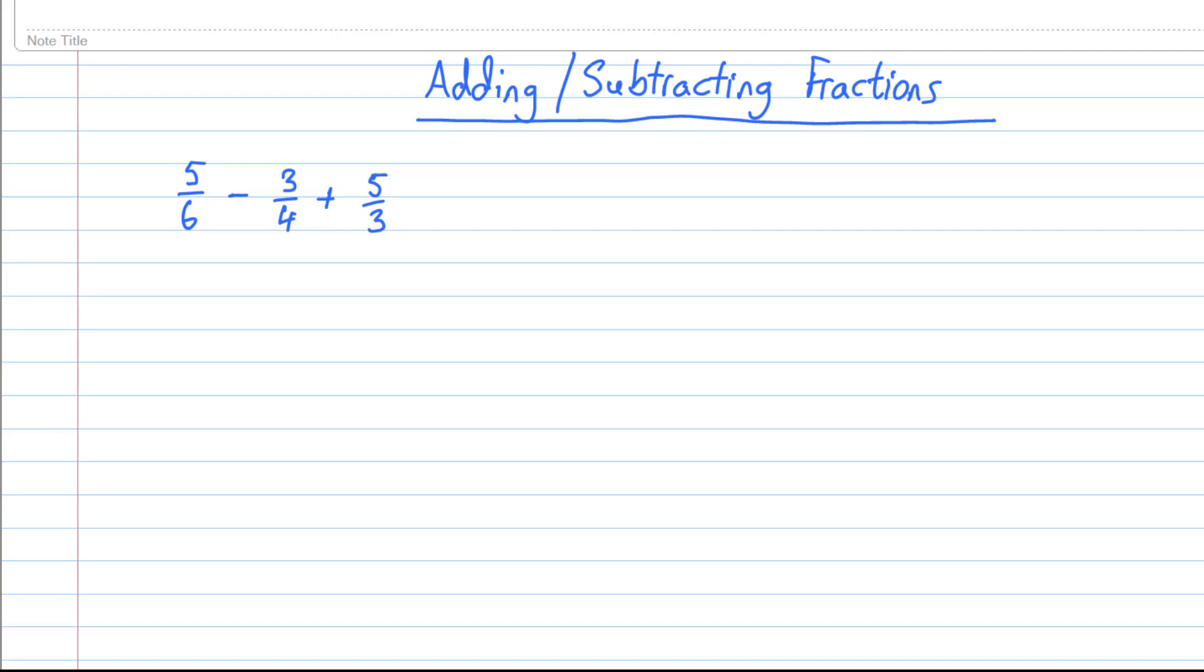In this video we're going to be looking at adding and subtracting fractions. For this example, it's going to be 5 over 6 minus 3 over 4 plus 5 over 3. It starts with needing to find a common denominator for each of the fractions, so we need the lowest common multiple of 6, 4, and 3.